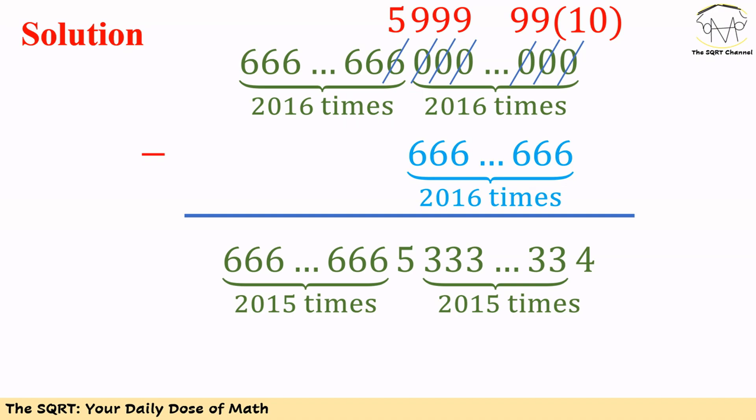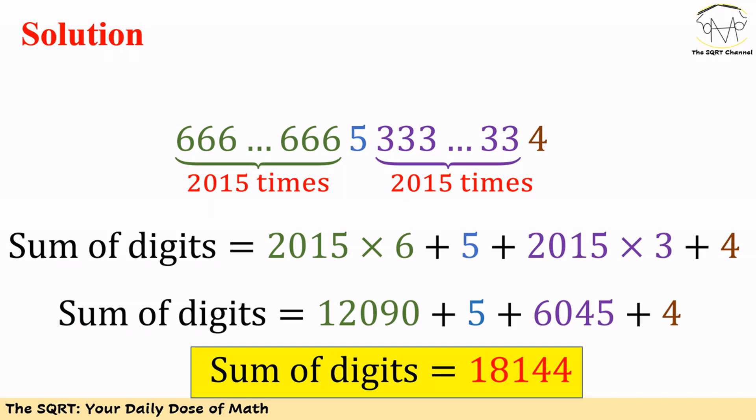For the next digits we are going to have 3, and that happens 2015 times. Then we are going to have 5, and then 2015 sixes at the end. So at the end we have a number that has 4032 digits: the first 2015 digits are all sixes, then we have 5, then 2015 threes, and at the end we have 4.